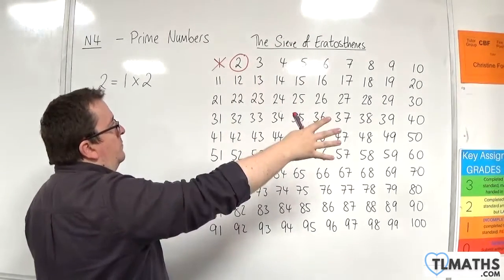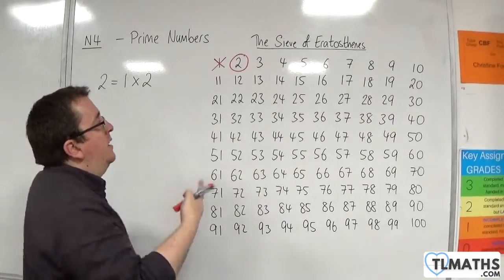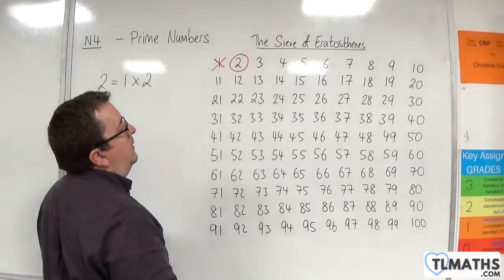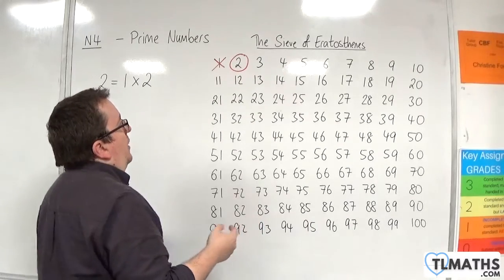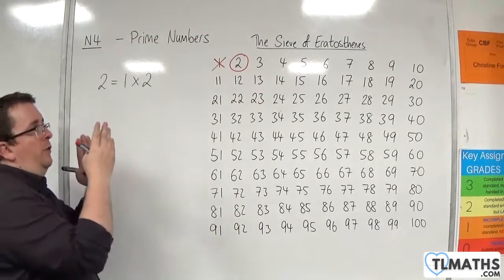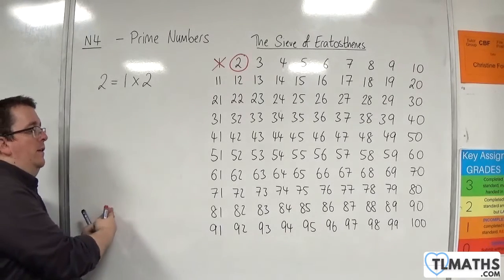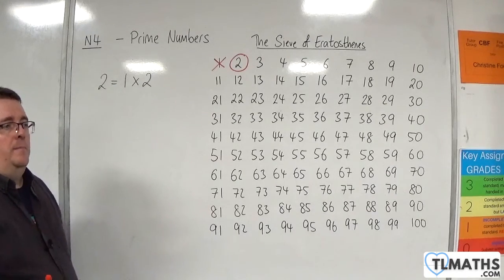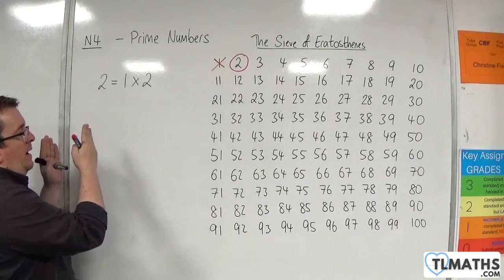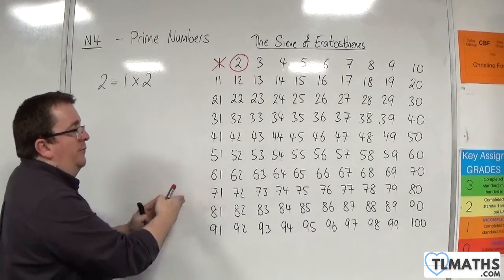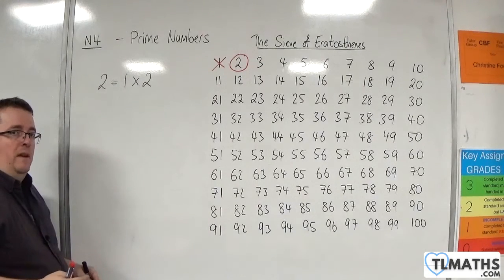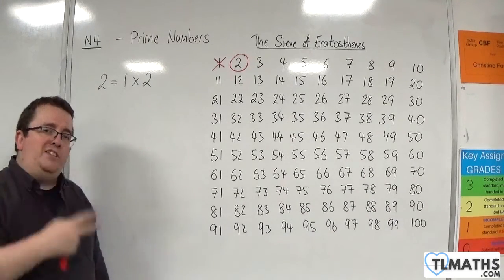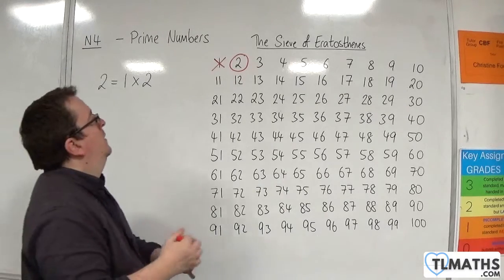So four for example will have one and four but it'll also have two so that can't be prime. Six will have one and six but it'll also have two so that can't be prime. So a prime number has precisely two factors one and itself. That's where the disparity comes with some people thinking that one is a prime number because if you just describe it as saying it has precisely two factors one and itself people think oh that must mean it's prime.